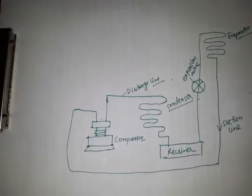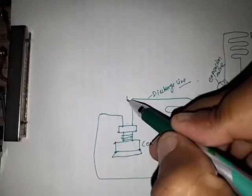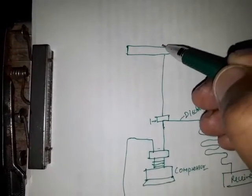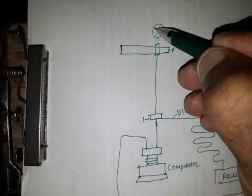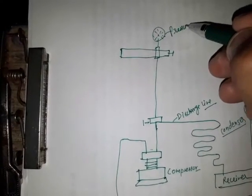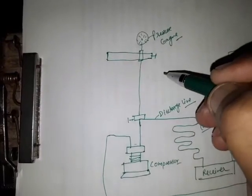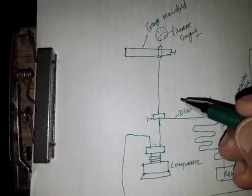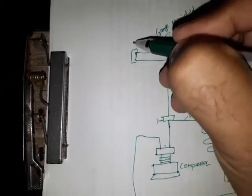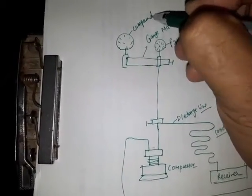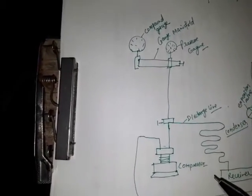There are also some pressure gauges mounted to know the pressures. There is a control valve, and pressure gauges are mounted here for noting down the readings. This is the gauges manifold, and here is a compound gauge connected with this line.